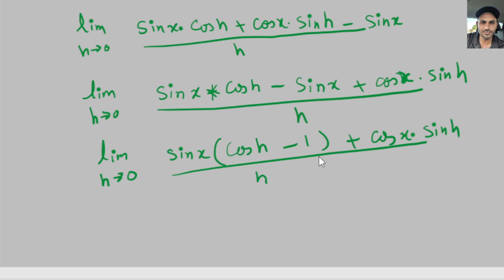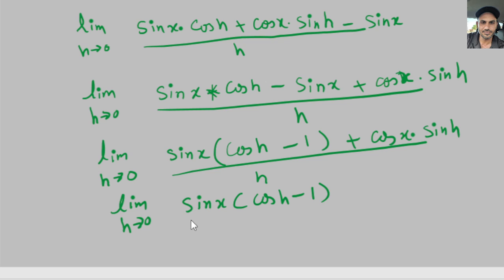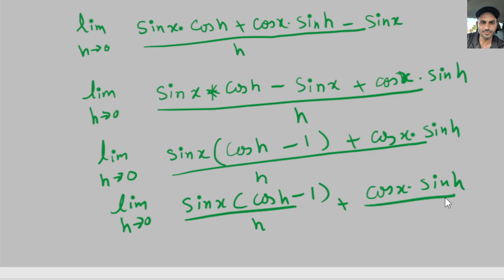Now we can break this into two fractions. We get the limit as h goes to 0 of sine of x times (cosine of h minus 1) over h, plus cosine of x times sine of h over h.